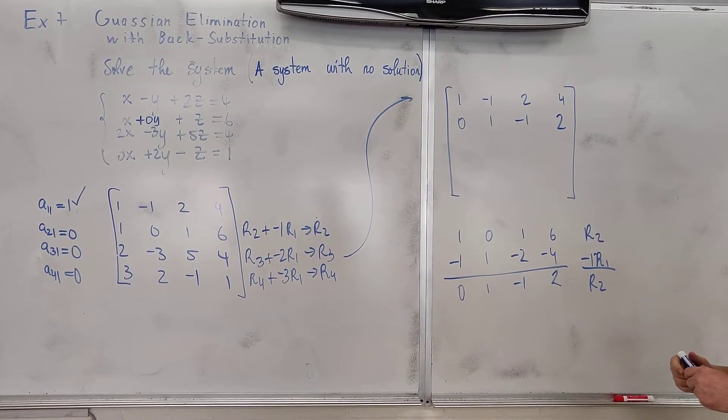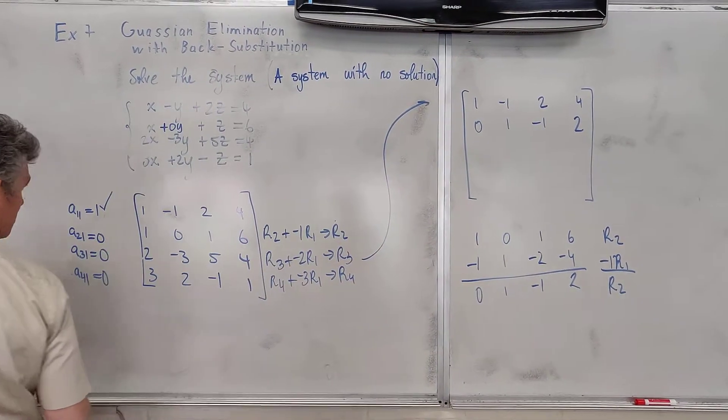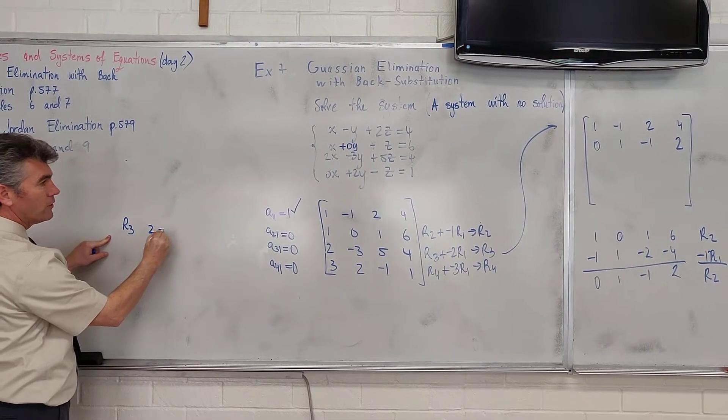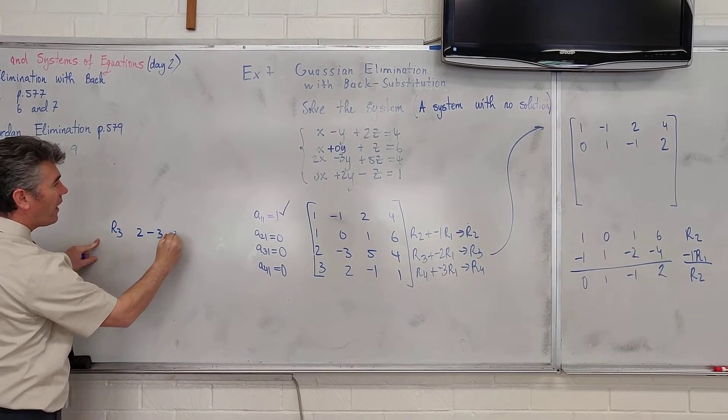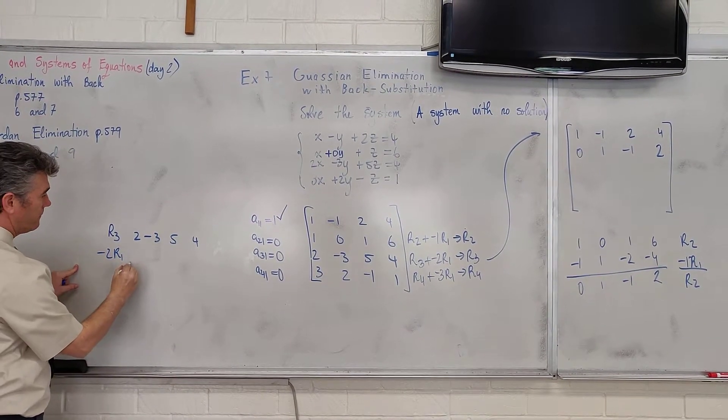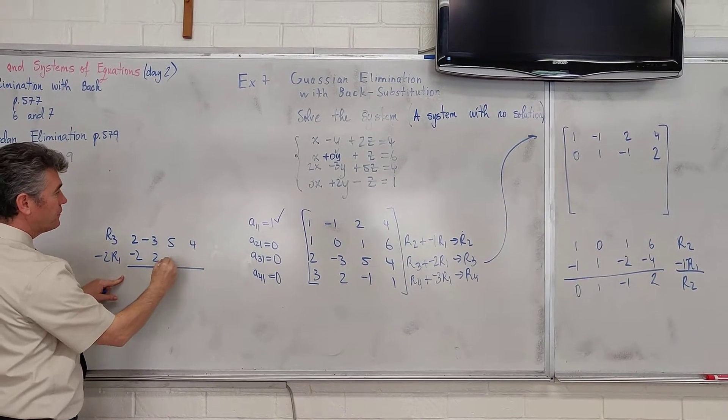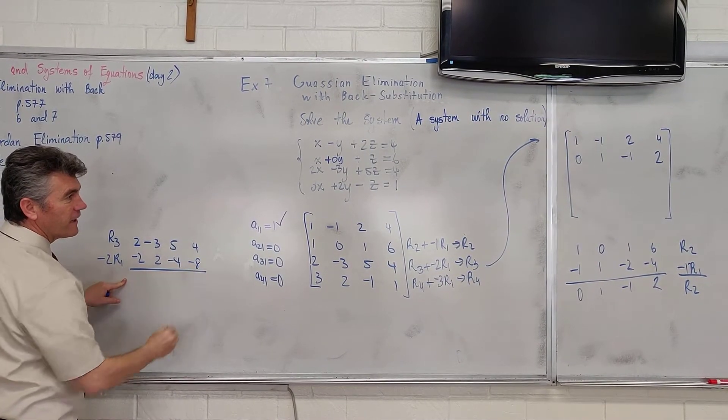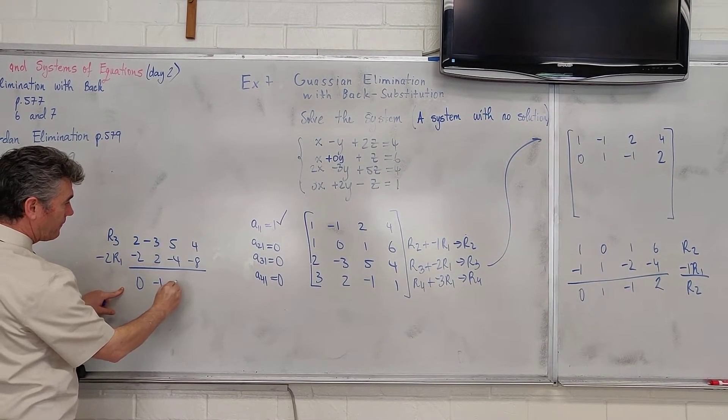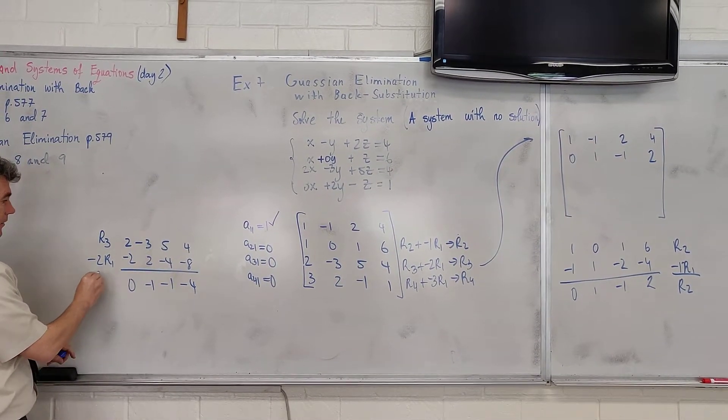Let's find our new row 3. For the new row 3, I'm going to move over here. There is plenty of space. We are going to do row 3, which is 2, negative 3, 5 and 4 plus negative 2 row 1. We have negative 2, positive 2, negative 4 and negative 8. And we get 0, negative 1, 1 and negative 4. So this is our new row 3.